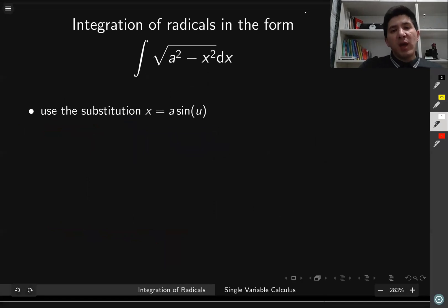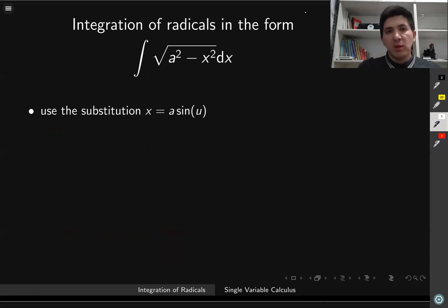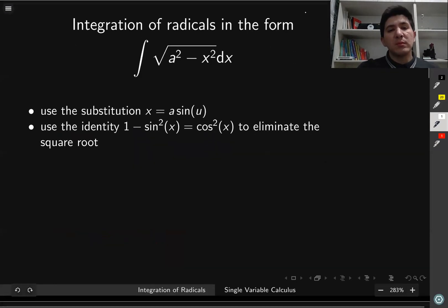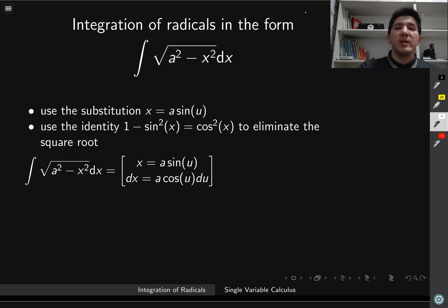We've already discussed how to handle this kind of integral in trigonometric integration. In general, if you have an integral in the form of the square root of a² minus x², you need to use the trigonometric substitution x equal to a times sine of u. Then dx equals a times cosine of u du, and the square root of a² minus x² becomes simply a times cosine of u.